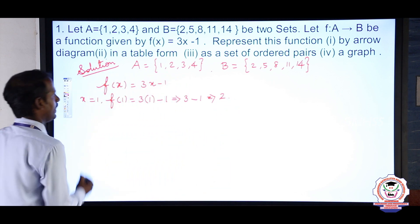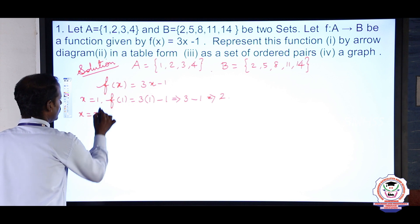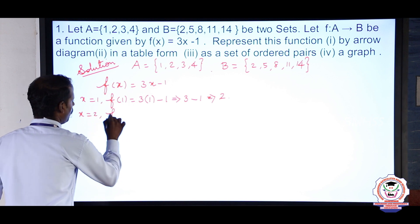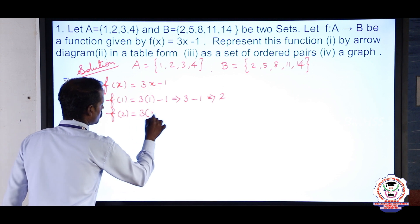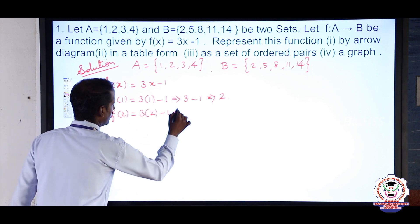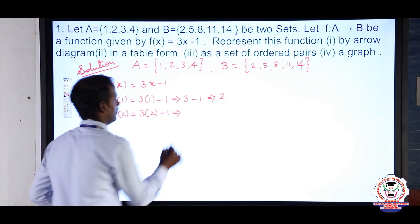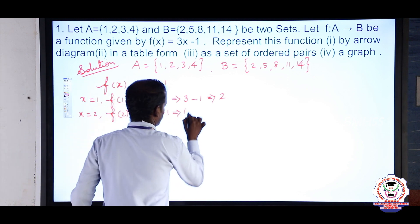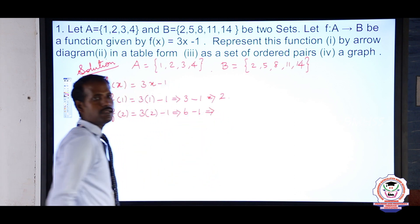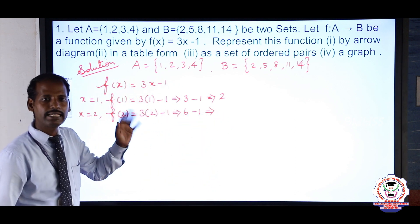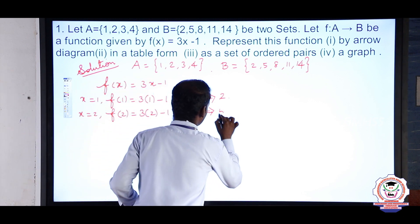Second, x = 2: f(2) = 3 × 2 − 1 = 6 − 1 = 5. So f(2) = 5.